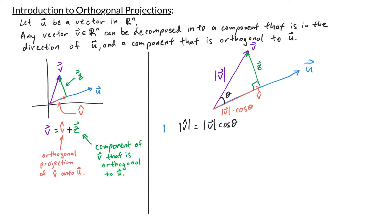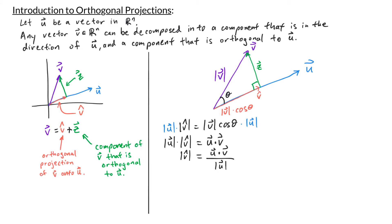Multiplying both sides by the length of u: on the left we have the length of u times the length of v-hat, and on the right we have the length of u times the length of v times cosine theta — but that expression is just u dot v. Therefore, the length of v-hat equals u dot v divided by the length of u.